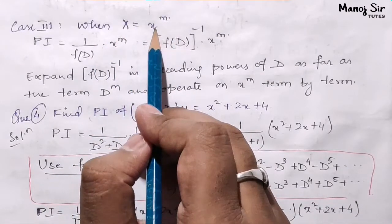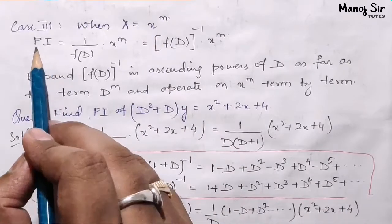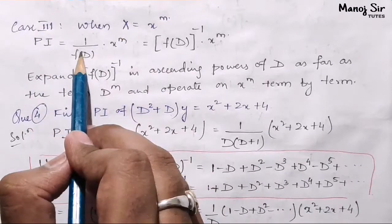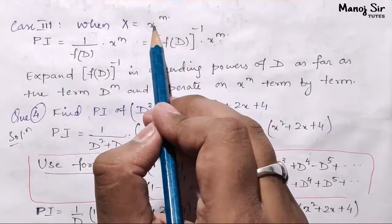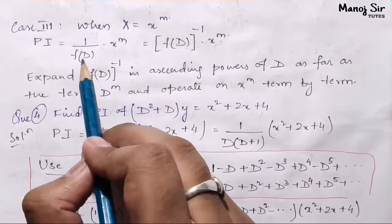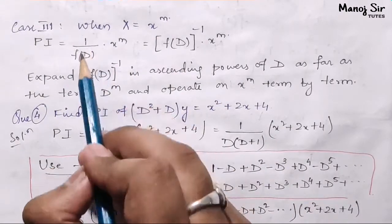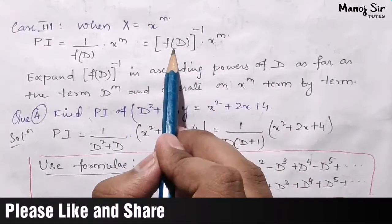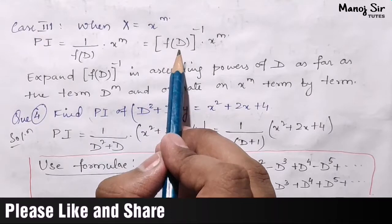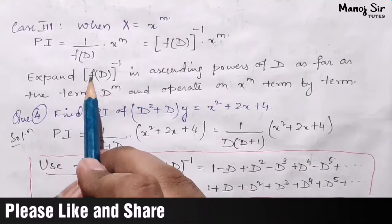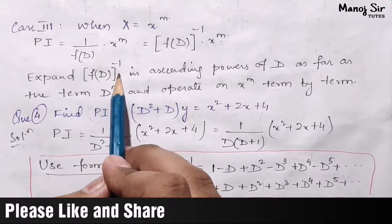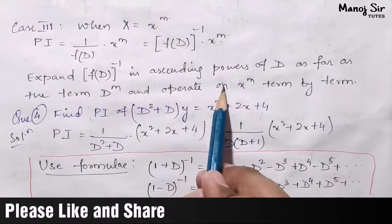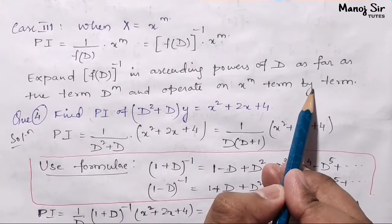PI equals 1 upon f(D) into x to the power n — this is the general form for writing PI. If it is asked in algebraic form, we need to take this to the numerator part: f(D) to the power minus 1 into x to the power n. We are going to expand f(D) to the power minus 1 in ascending powers of D, as far as the term D to the power n, and operate on x to the power n term by term.